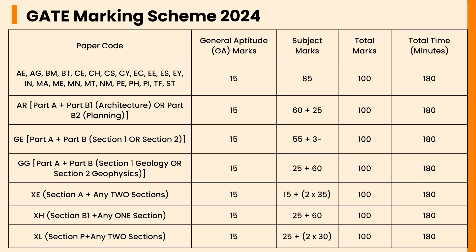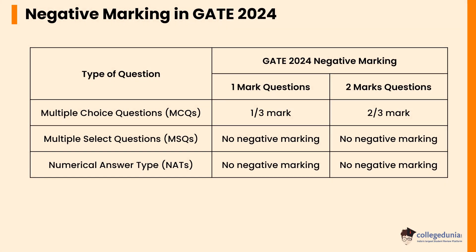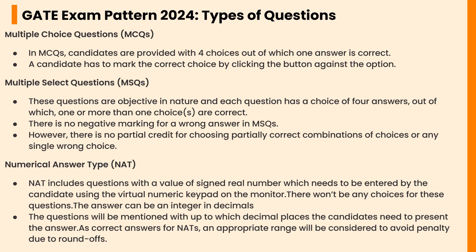The remaining 72 percent weight of total marks is for the subject of the paper. For paper codes ARC, YEY, GG, MA, PH, ST, XH, and XL, General Aptitude covers 15 percent of 100 marks and the remaining 85 percent is covered by the subject paper. Regarding negative marking: for one-mark MCQs, one-third mark is deducted for a wrong answer; for two-mark MCQs, two-thirds mark is deducted. There is no negative marking for MSQ and NAT questions.